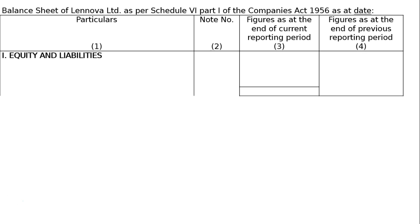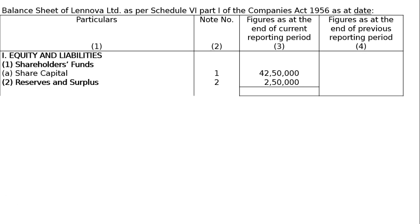After drawing the proper format, the first part is equity and liabilities. One is shareholders' funds. The amount being: one, share capital — note number 1, that is notes to accounts — that is rupees 42 lakh 50,000. Second part, reserves and surplus — note 2 — that is rupees 2 lakh 50,000. The total amounts to rupees 45 lakhs.